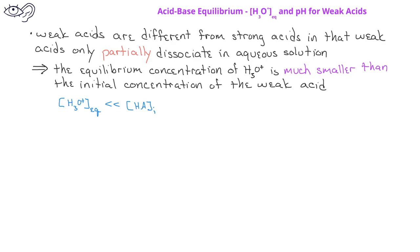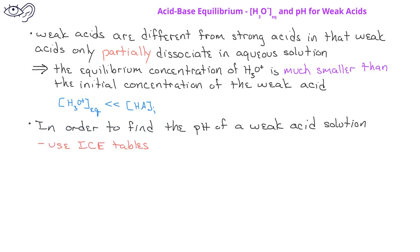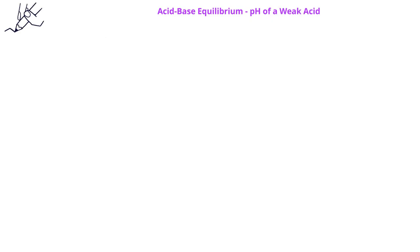In order to find the pH of a weak acid solution, we'll need to use ICE tables, as we have done in the past, along with using the acid ionization constant. This will be a similar process to using an equilibrium constant and an ICE table to find the equilibrium concentrations of reactants and products that we've done in previous videos. Let's work through an example of finding the equilibrium concentration and the pH for a weak acid solution.